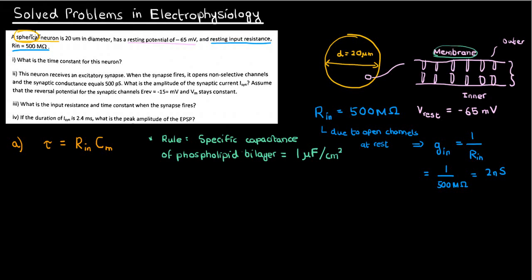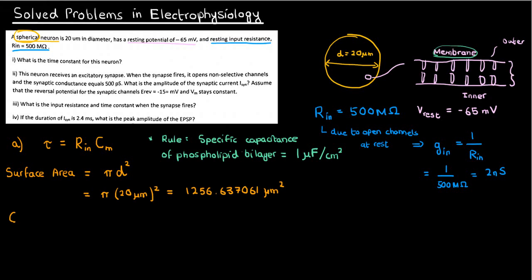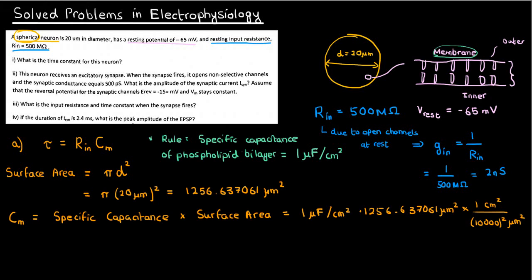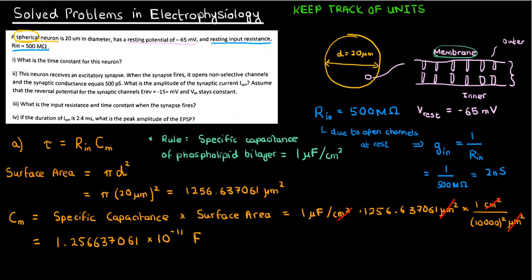In this case, the cell is a sphere, so the total surface area of the membrane is just the surface area of that sphere, which is pi times the diameter squared. If you do the calculation, the surface area of the cell is around 1260 square microns. To get the capacitance of the membrane, you multiply this area by the specific capacitance. Canceling out the microns squared gives us a capacitance of 1.257 times 10 to the negative 11 farads. Always keep track of your units and conversion factors — if you lose track, it's very easy to end up with the completely wrong answer.